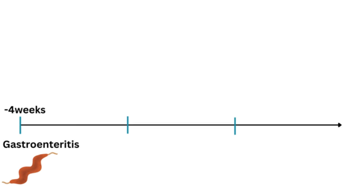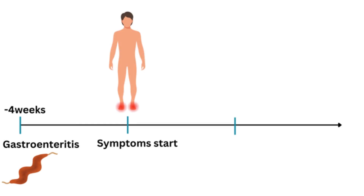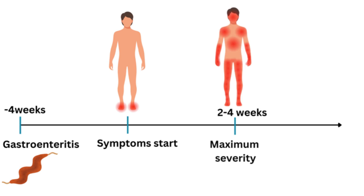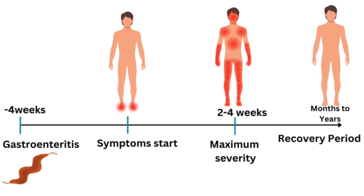For the clinical course, symptoms usually start within 4 weeks of a preceding infection such as gastroenteritis. From the history, the patient might have had a gastroenteritis 4 weeks previously. The symptoms usually start in the feet and progress upwards, reaching maximum severity within 2-4 weeks, followed by a slow recovery period that can last months to years.